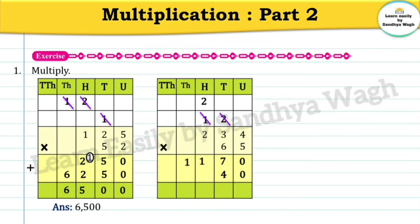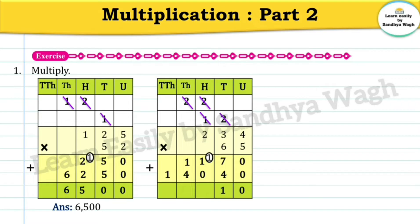Six threes are eighteen, eighteen plus two is twenty, so we will write 0 in the hundreds place and 2 will go in the thousands place. Six twos are twelve, twelve plus two is fourteen. Now let's add these numbers: zero plus zero is zero; seven plus four is eleven, write 1 and carry one; one plus zero plus one is two; one plus four is five; and one more. Our final answer is 15,210.